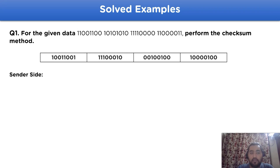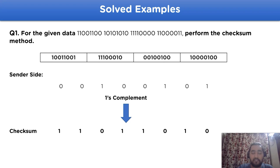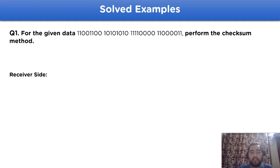At the sender side, we perform one's complement on the obtained addition value. That comes out to be 1 1 0 1 1 0 1 0 — this is the checksum value. This checksum value is added to the original data and shared with the receiver side.